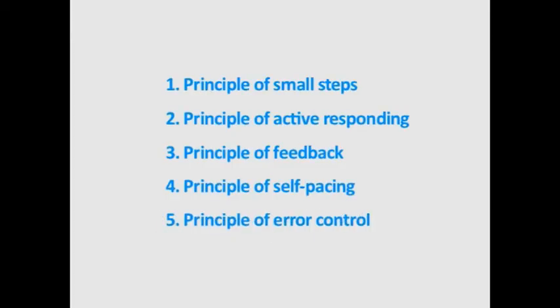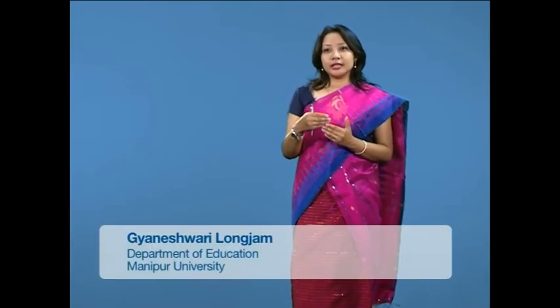Principle of error control. Program instruction is closely linked to the issue of error control. The learning sequence is broken down into a large number of small steps, so that the rate of error is kept down to a minimum and allows reinforcement to be frequent and immediate. Formative evaluation of the program helps to reduce errors to a minimum. Thus, it helps to concentrate more on analysis of the student's performance rather than on his errors.